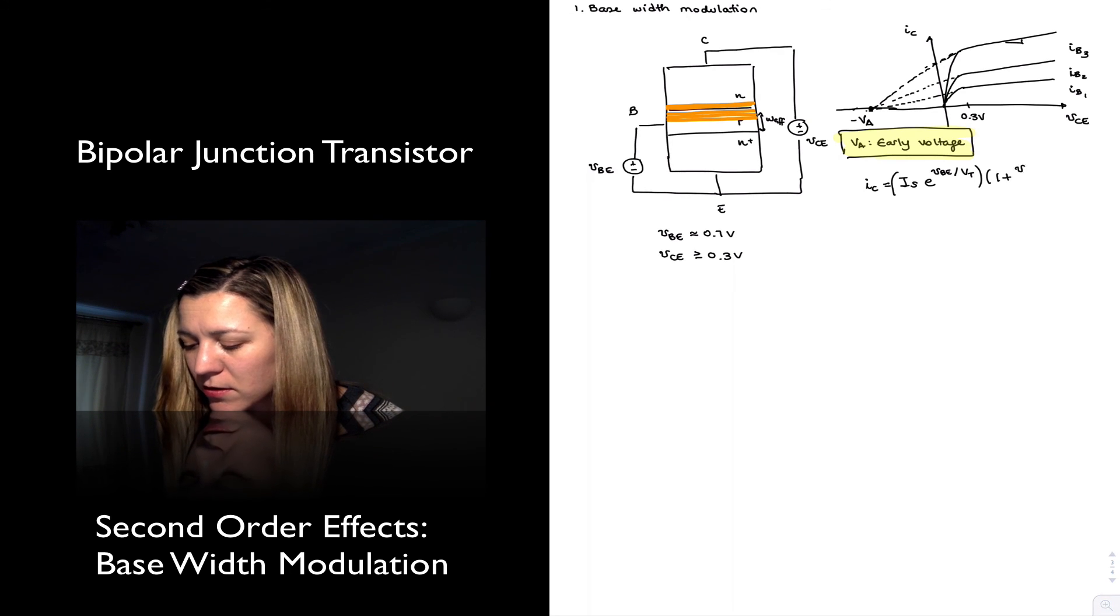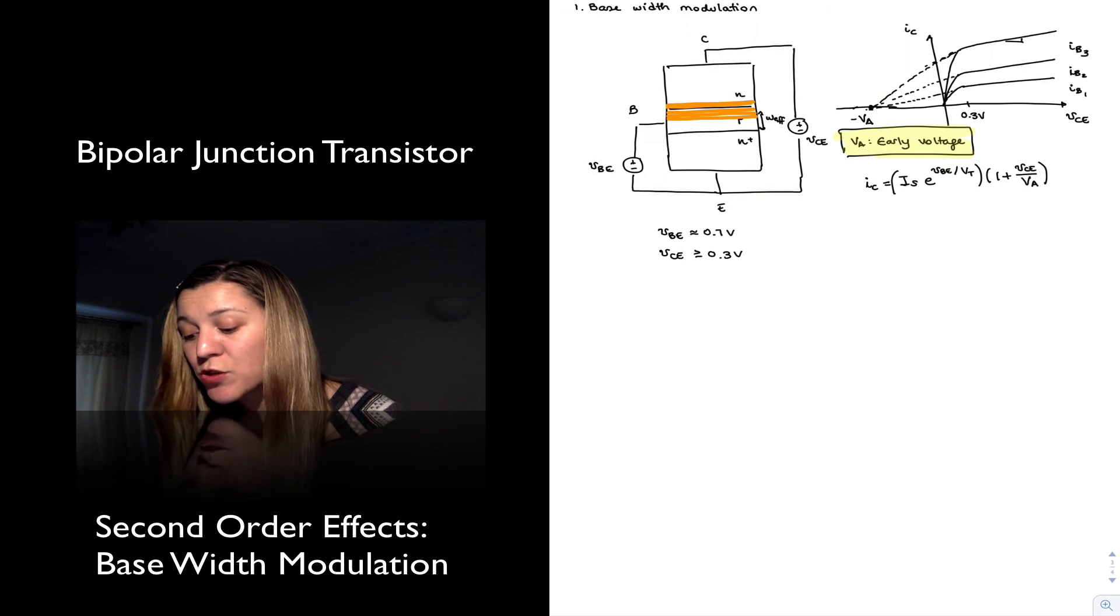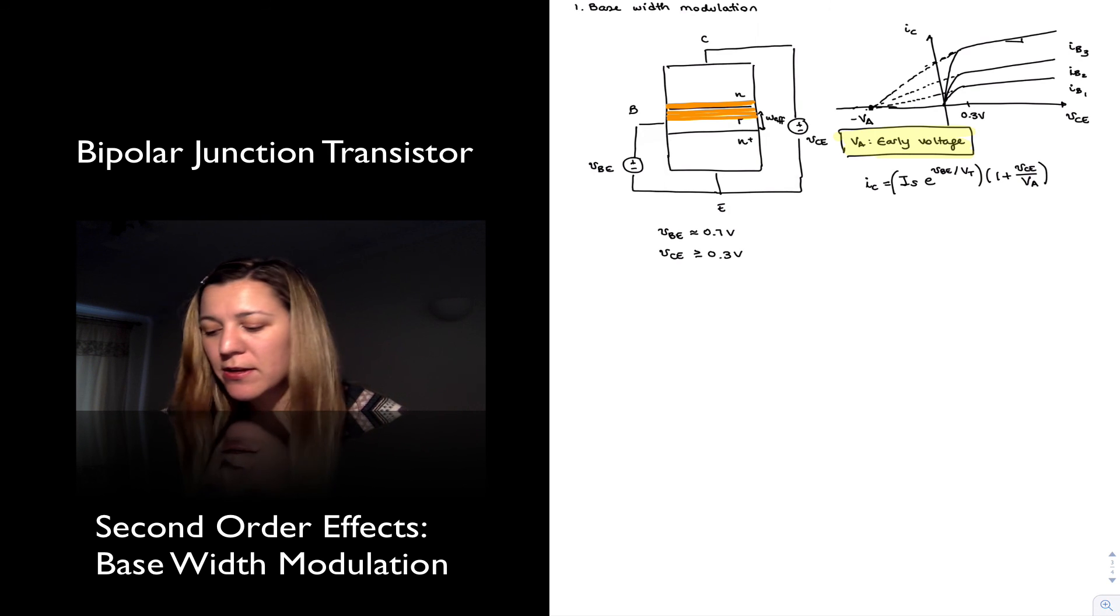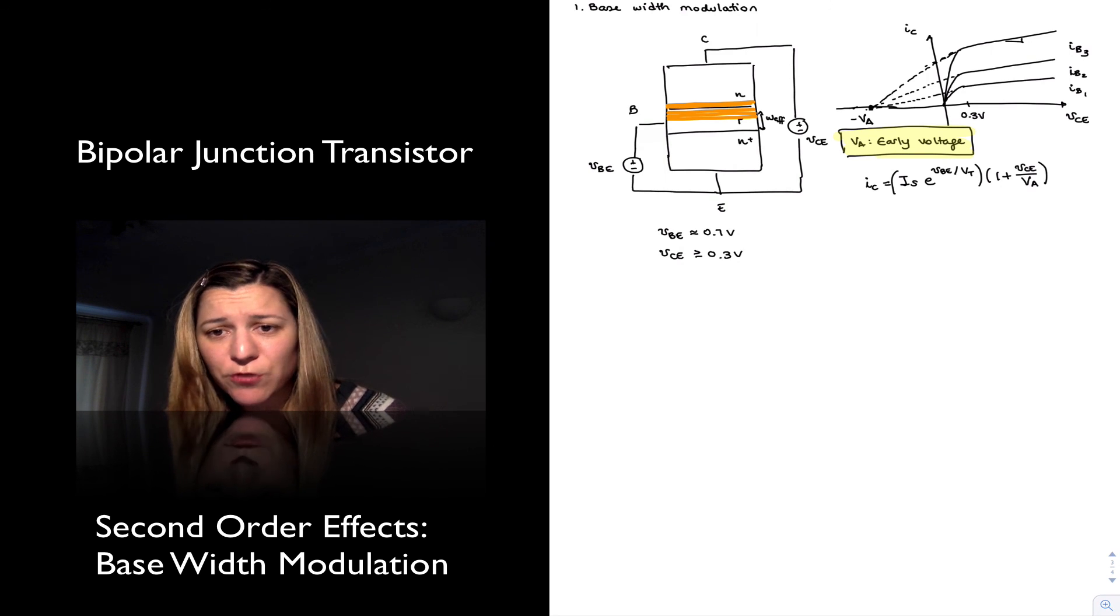The way we include the early voltage or that base-width modulation in our model is that we multiply this times 1 plus VCE over VA. And so if we plot this new expression for IC, we will see that we will get exactly that result in the lines, a slight increase in collector current with increases in collector-emitter voltage.